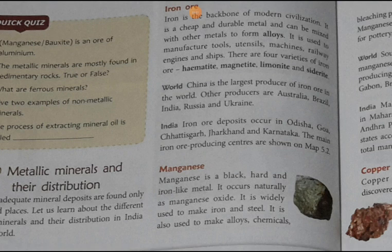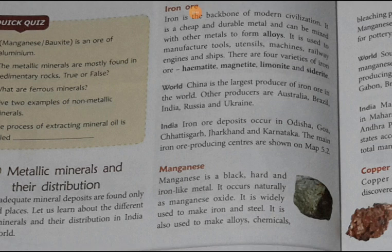Iron is the backbone of modern civilization. It is a cheap and durable metal that can be mixed to form alloys. It is used to manufacture tools, utensils, machines, railway engines, and ships. There are four varieties of iron ore: hematite, magnetite, limonite, and siderite.